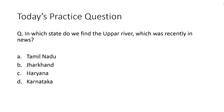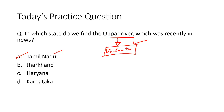Practice question: In which state do we find the Upar River, which was recently in the news? The correct answer is option A — Tamil Nadu. The Upar River is in the news because of protests in the Thoothukudi district of Tamil Nadu against the Sterlite industry of the Vedanta group, which has caused massive pollution in the region, severe health consequences, and water pollution in the Upar River.